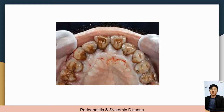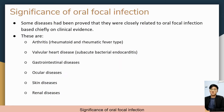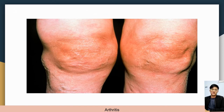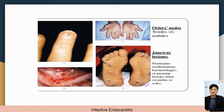This is a picture of periodontitis related to systemic disease. Some diseases have been proved to be closely related to oral focal infection based on clinical evidence. These are: arthritis, usually rheumatoid and rheumatic fever type; valvular heart disease, which is sub-acute bacterial endocarditis; gastrointestinal diseases; ocular disease; skin disease; and renal disease. This is the clinical feature of arthritis, and this is infective endocarditis showing its clinical features.